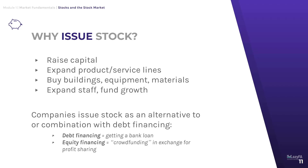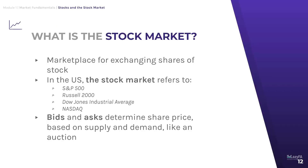As an alternative to or in combination with debt financing, companies will issue stock. In exchange for the investment they get from the public, they'll ideally use that money to grow the company, expand operations, generate more income, and hopefully increase the share price over time. The stock market then is simply a marketplace for the exchanging of these shares of stock amongst individuals, hedge funds, investment banks, and other institutions. In the United States, the stock market typically refers to four indexes — the S&P 500, the Russell 2000, the Dow Jones Industrial Average, and the NASDAQ.